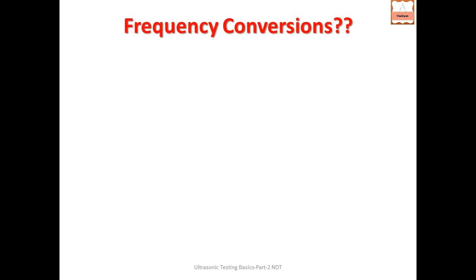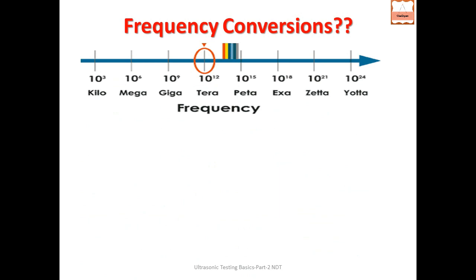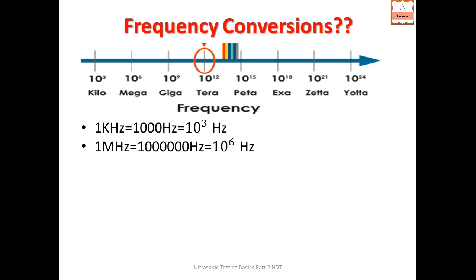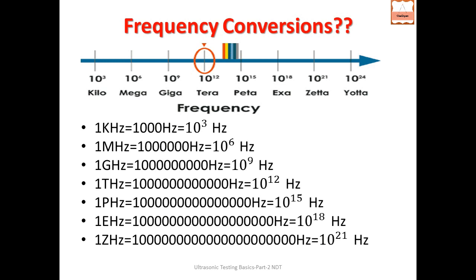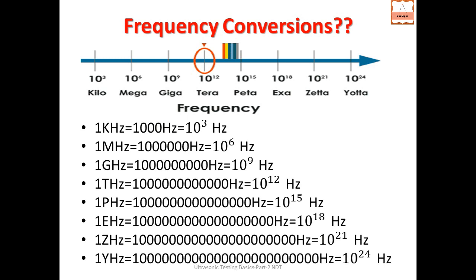Frequency conversions: kilo, mega, giga, tera, peta, hexa, zeta, yota. One kilohertz mein teen zeros hote hain. One megahertz mein six zeros hote hain. One gigahertz mein nine zeros hote hain. Jaise zeros badhte hain, value badhti jaati hai. Yota sabse bada unit hai.